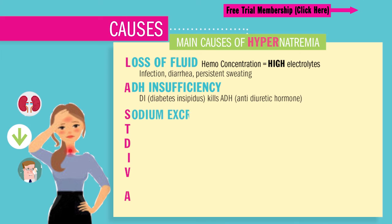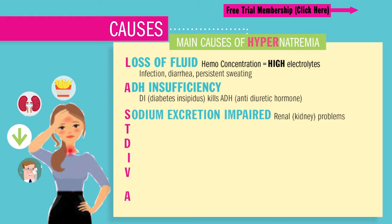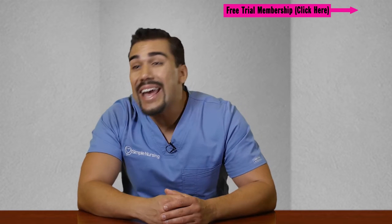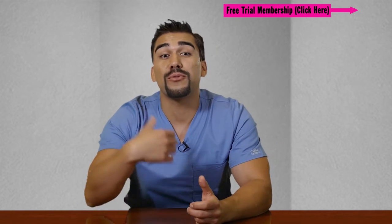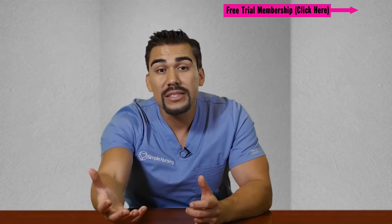S is for sodium excretion impaired — so renal failure, basically broken kidneys. T is from too much processed foods: packaged foods, canned foods, fast foods, even fried foods.